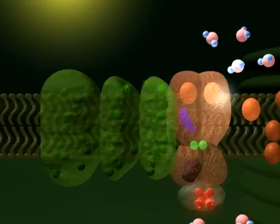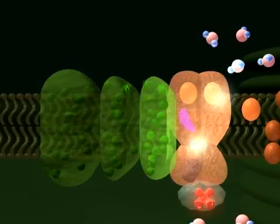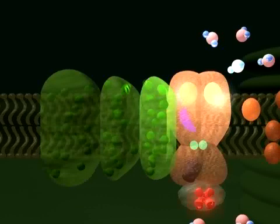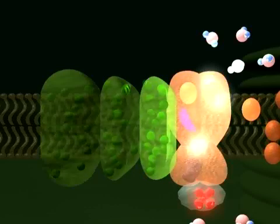The light absorption and transfer events take place in the light harvesting antenna, and the reaction centre is the site of the charge separation, with an electron transferred to Qb and from the manganese cluster, which becomes positively charged.